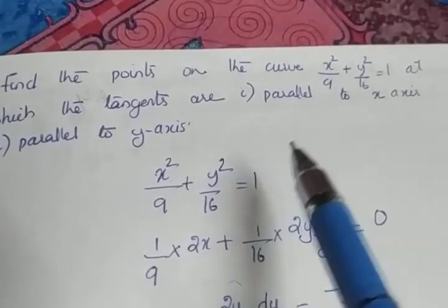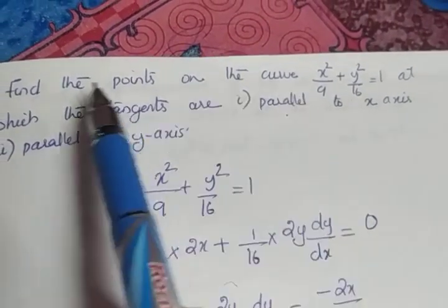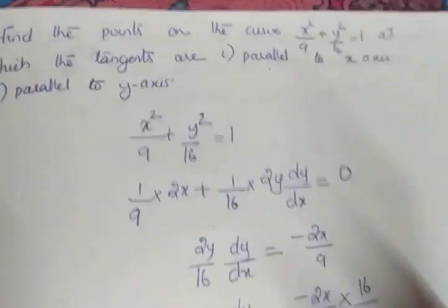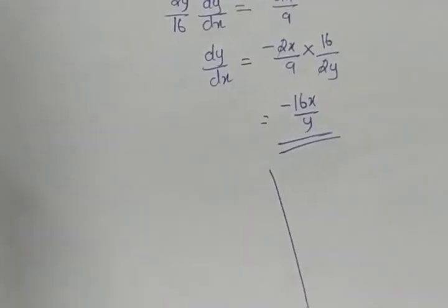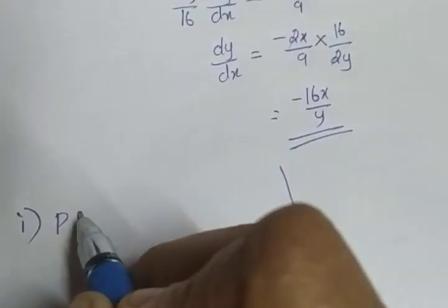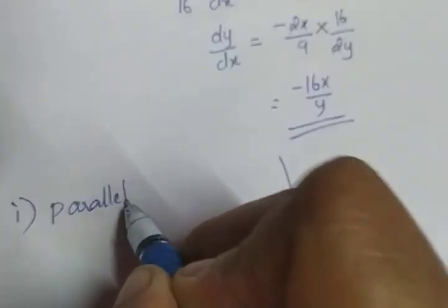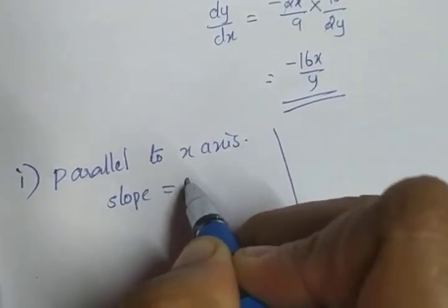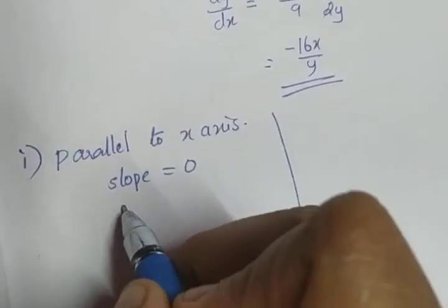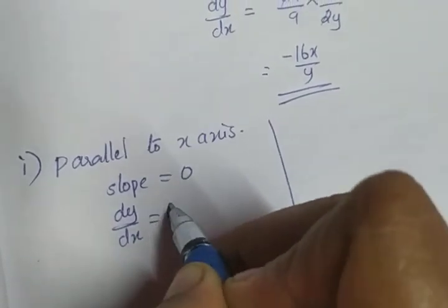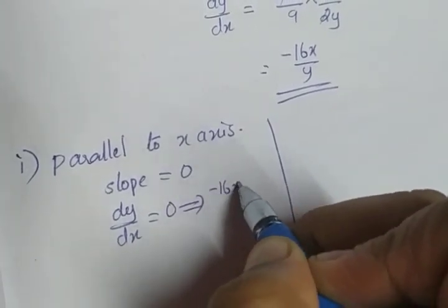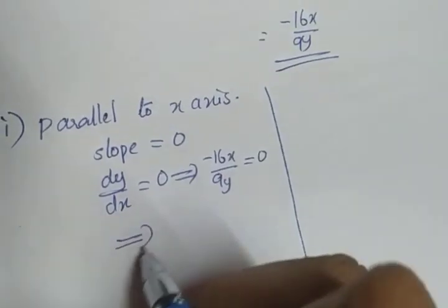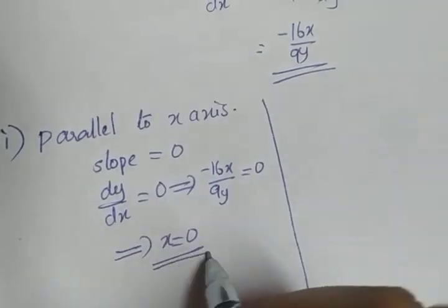There are two parts to the question. The first part is parallel to the x-axis, and the second part is parallel to the y-axis. If the tangent is parallel to the x-axis, the slope equals 0. So dy/dx = 0, which gives −16x/9y = 0, implying x = 0. We have the x-coordinate as 0.